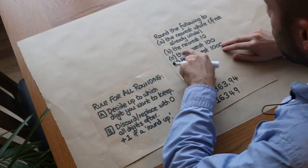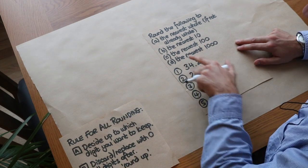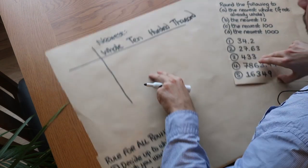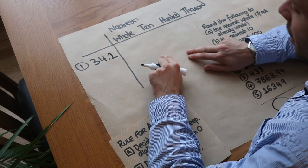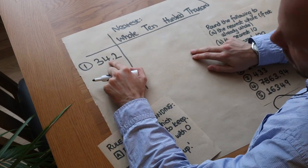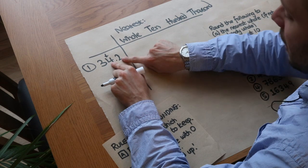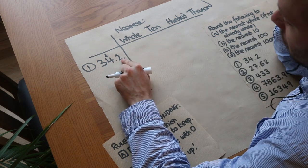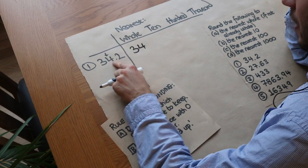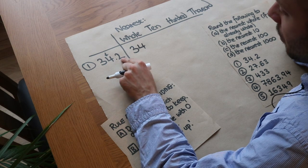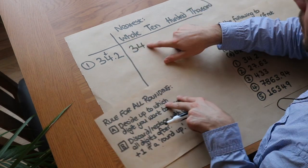Let's round each of these numbers to the nearest whole, ten, hundred, and thousand where relevant. First: 34.2. To the nearest whole, we keep up to the units digit - the four - and check the next digit after the decimal point. Two is not greater than or equal to five, so the four stays as it is: 34. We don't need to write 34.0 because that's the same as 34.